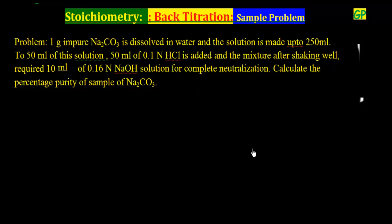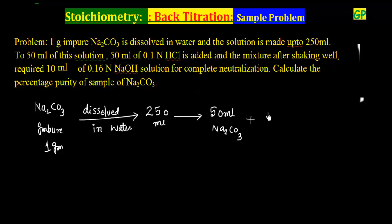So how will you calculate? Let us say we have a sample of Na2CO3 and this sample is impure and the weight of this sample is 1 gram and this sample is dissolved in water. So this sample is made up to 250 ml. 50 ml of this solution is taken. And 50 ml of 0.1 N HCl is added. So for this solution, 50 ml Na2CO3 and we have added 50 ml of HCl. And the concentration of HCl is 0.1 N and normally it is same as molarity because N factor for HCl is 1, so we can write 0.1 M.